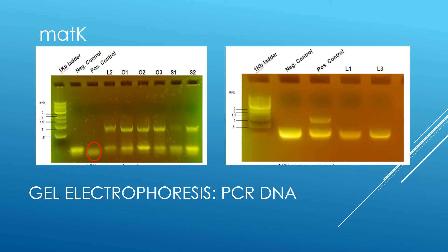If annealing of the MATK primer set was successful, a bright band would appear around 0.8 kilobases in addition to the primer dimer. As you can see in these gels, L2, S1, S2, S3, O1, O2, and O3 were successful, but samples L1 and L3 were not. For this run, an error occurred with the positive control because the only band to appear was the primer dimer. Again, this could have been an experimental error.